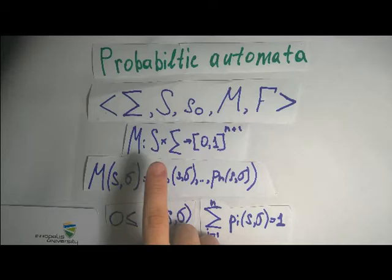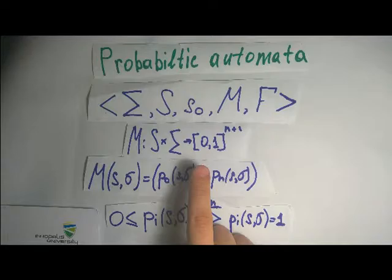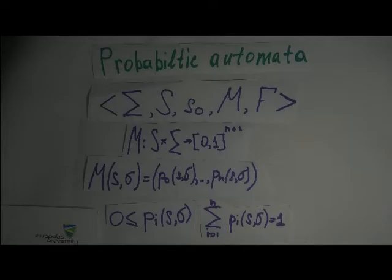M is a function of two variables: state and input character. The result of M is a vector with n+1 length which includes probabilities of transition from node S to node Si by character sigma. Of course, every probability is more than 0 and the sum of all probabilities for node S equals 1.